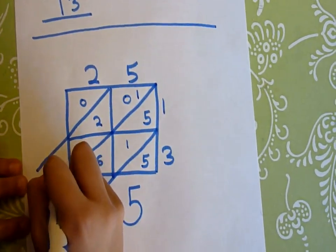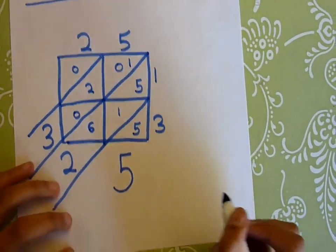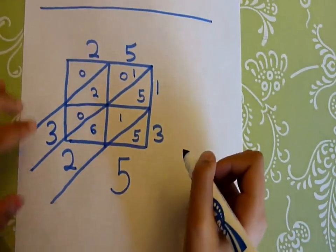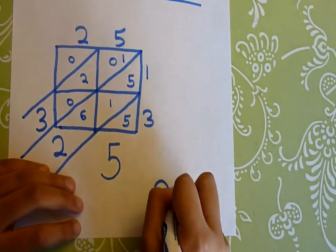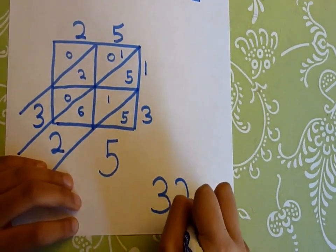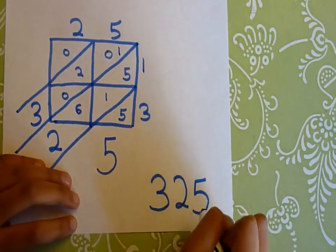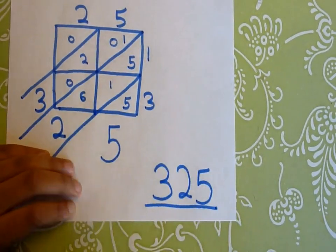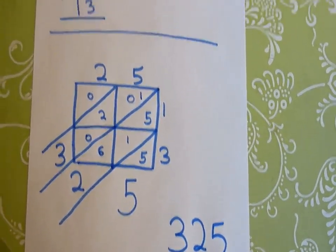And now that's zero so you don't have to put anything there. Now this is our answer, 325. There are no commas in this answer, so this is the final answer. Thanks for watching, bye.